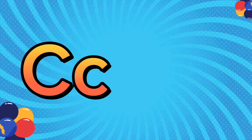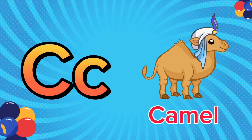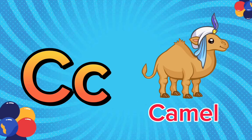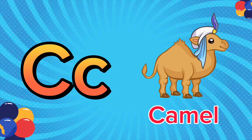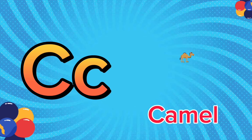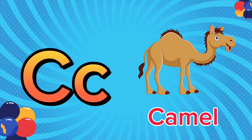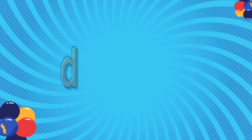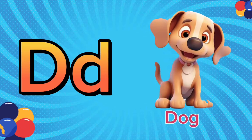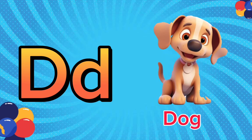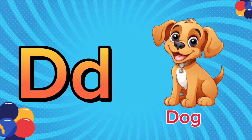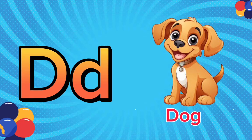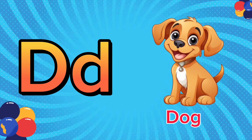C is for camel. C, C. Camel. C is for camel. C, C. D is for dog. D, D. Dog. D is for dog. D, D.